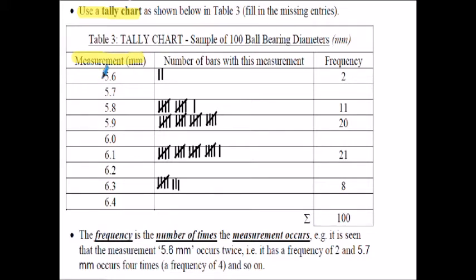I've filled some of the categories in for us. For 5.6, I noticed on the previous slide there were two ball bearings having that dimension, so the frequency was two. The 5.8 diameter ball bearings had 11 items with that dimension. For 5.9, I counted 20 ball bearings. For 6.1, I counted 21, and for 6.3, I counted 8. I'm going to let you fill in the table and find the frequencies for ball bearings having a diameter of 5.7, 6.0, 6.2 and 6.4 mm.